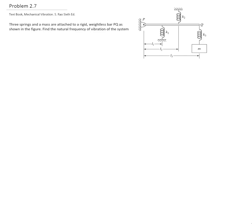In this video, I will solve problem 2.7 from our textbook, Mechanical Vibration from Rauh, 6th edition. Here in the figure, we see three springs and a mass that are attached to a rigid, weightless bar PQ. We would like to find the natural frequency of vibration of the system.